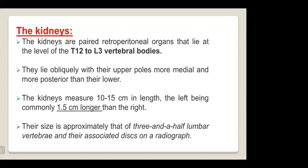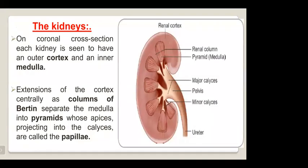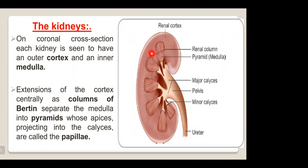Their size is approximately that of three and a half lumbar vertebrae and their associated discs. On radiograph, on coronal cross-section, each kidney is seen to have an outer cortex and inner medulla. Extension of the cortex centrally as columns of Bertin separate the medulla into pyramids. The renal papillae project into the calyces.